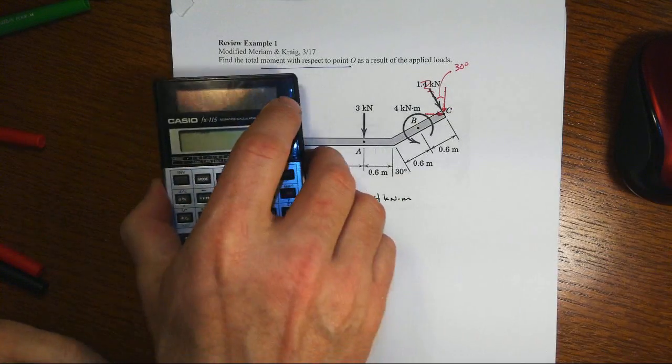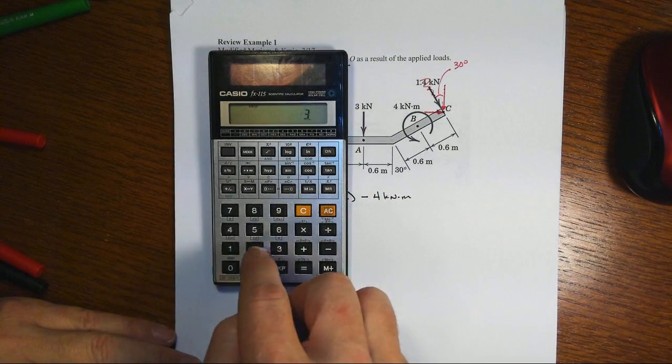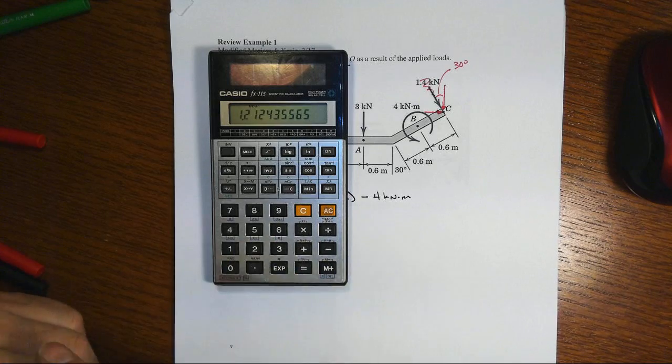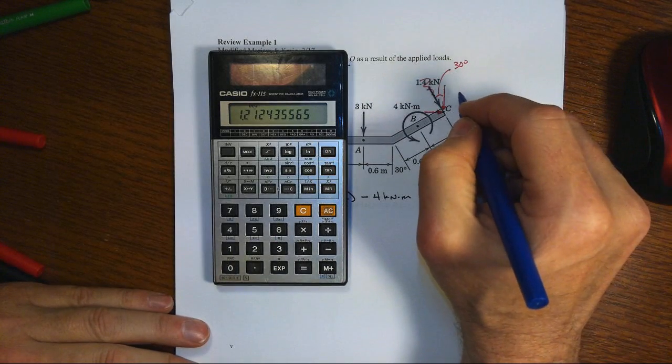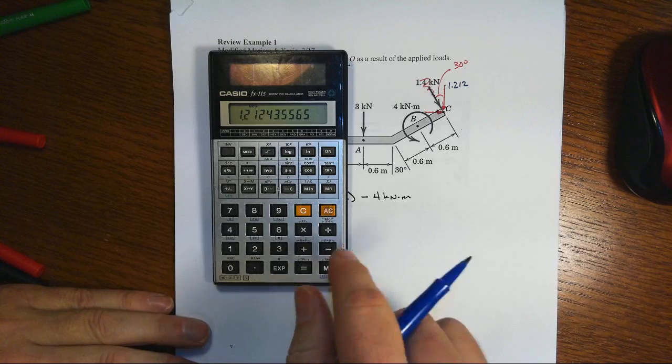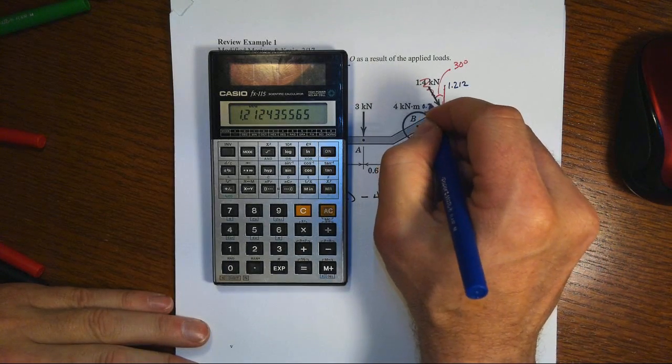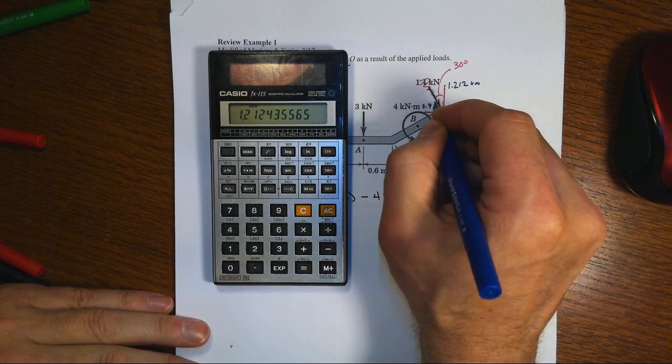And so let's see here, 1.4 times cosine 30 is going to be 1.212, so there's your vertical component. The other one's going to be 0.5, so that will be 0.7 kilonewtons.